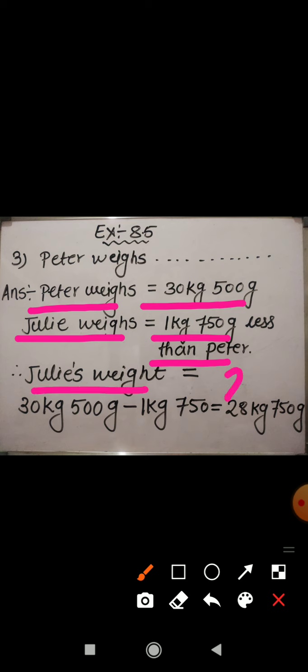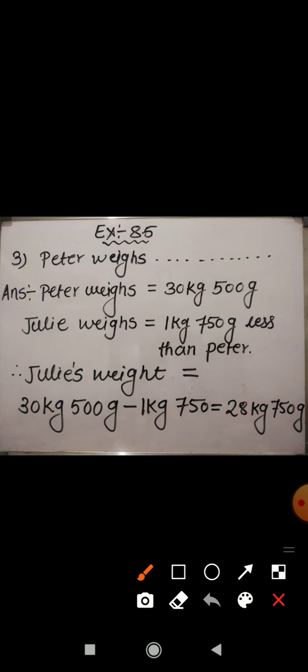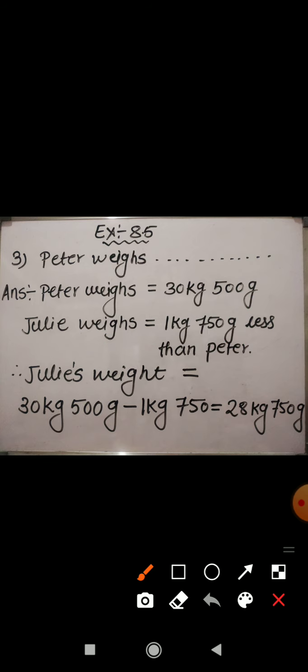So here we have to find out Julie's weight. How will you find out Julie's weight? As we are given Julie weighs 1 kg 750 gram less than Peter. See, the word 'less' is there. So what we have to do to find out Julie's weight? We need to subtract this weight — 1 kg 750 gram — from the weight of Peter to find out Julie's weight.